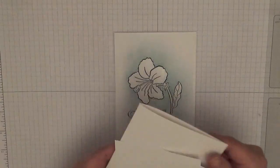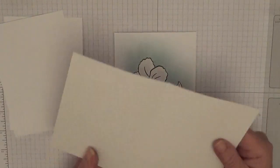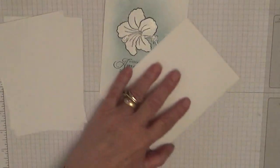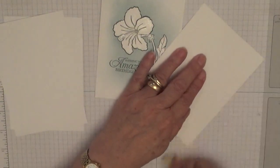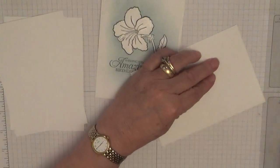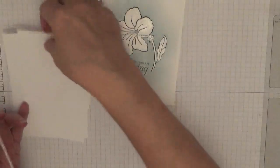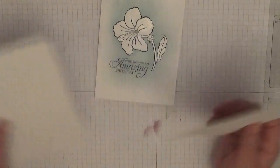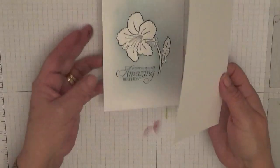I also use the card base of eight and a quarter by five and seven eighths scored and folded in half and furnished and two pieces of whisper white at five and five eighths by three and seven eighths.